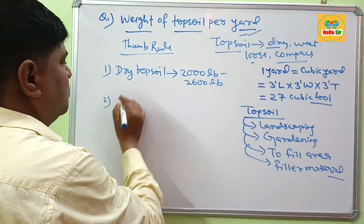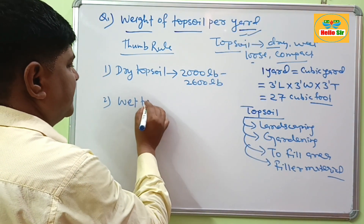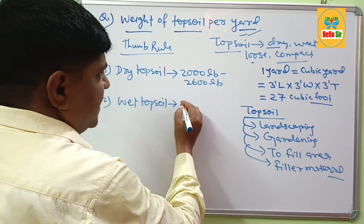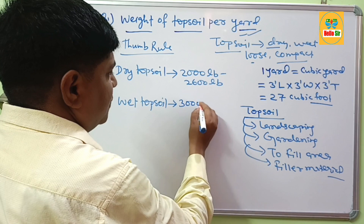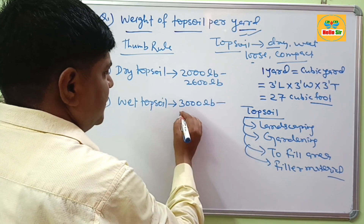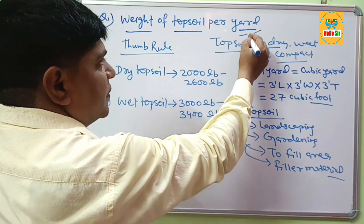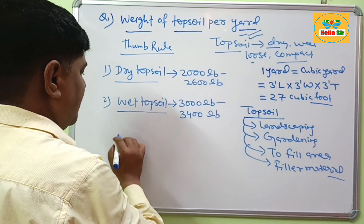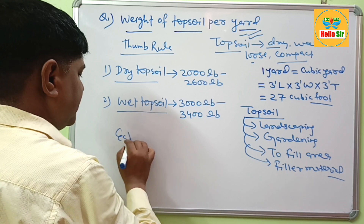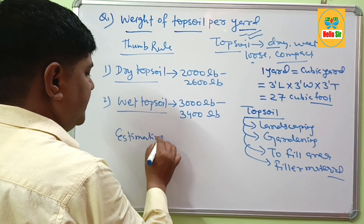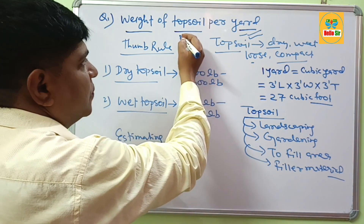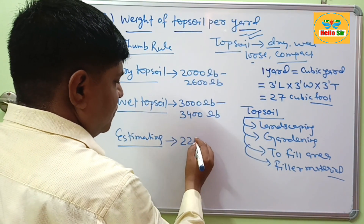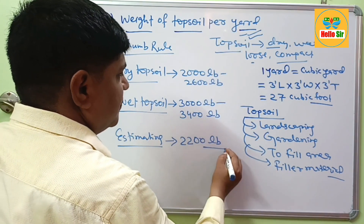For topsoil in wet condition, the weight can range from 3000 pounds to 3400 pounds per yard. Remember, this is thumb rule. But for estimating purposes, the weight of topsoil per yard is taken as 2200 pounds per yard.